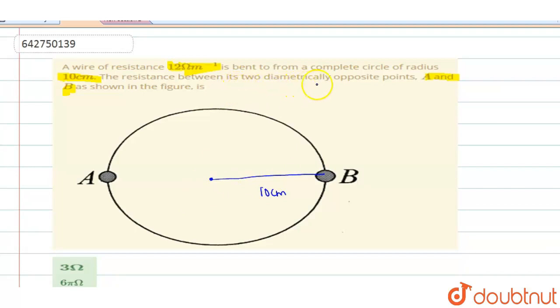The resistance between its two diametrically opposite points A and B is. So you have to find the resistance with respect to this A and B.